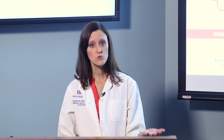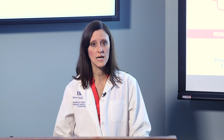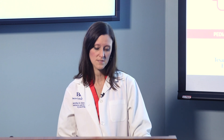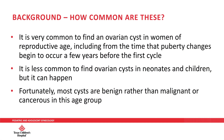Sometimes people have a ruptured cyst that results in abdominal pain, and typically they don't see these actively on an ultrasound, but suspect it because there might be fluid in the pelvis. It is very common to find an ovarian cyst in women of reproductive age, including from the time that puberty changes begin a few years before the first cycle. It is less common to see ovarian cysts in neonates and children, but it can happen. Fortunately, most cysts are benign rather than malignant or cancerous in children and adolescents.